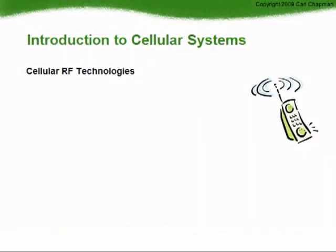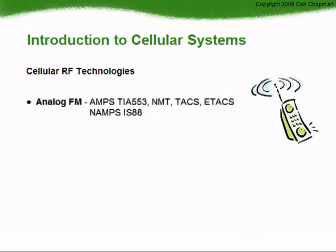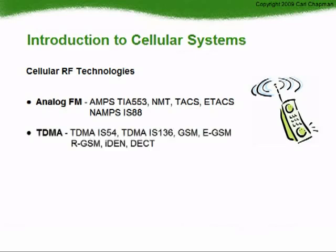There are three core communications technologies used for phones to communicate with the base station over the air, and all current cellular protocols are derived from these core technologies. Analog FM is the original cellular technology; most analog systems are no longer operating, with their spectrum reused for newer digital systems, but they may still occasionally be found in some third-world countries. The protocols that used analog technology were AMPS or TIA-553, NMT, TACS, and NAMPS or IS-88.